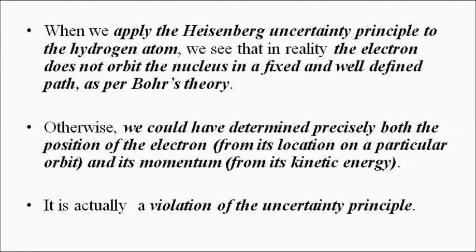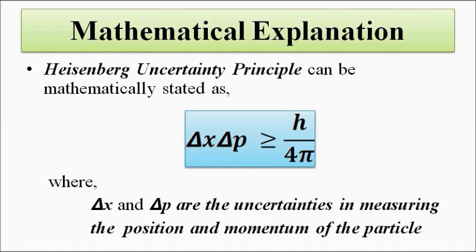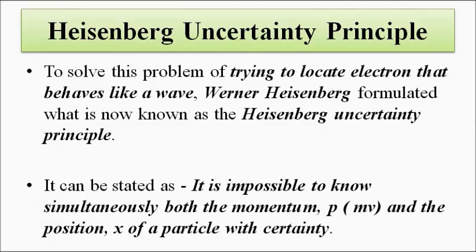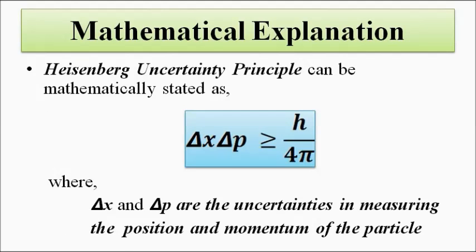From this we can conclude that it is very difficult to determine the exact location or position of the electron at any given point in time with precise results. The part of Bohr's theory which states that electrons orbit around the nucleus in well-defined circular orbits is incorrect. This is all about the Heisenberg uncertainty principle, applied to the hydrogen atom and the movement of electrons.